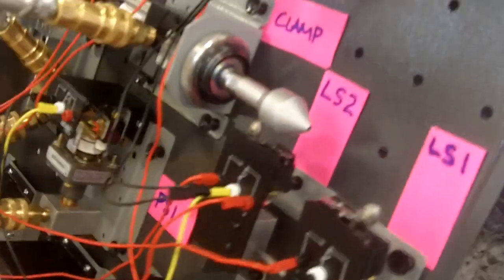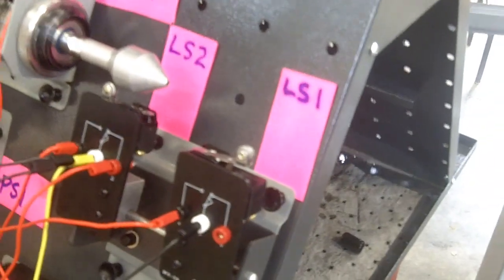The error I've introduced is I have rotated limit switch one, if you see right there, out of the path of our clamp cylinder.